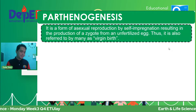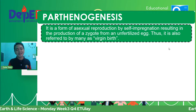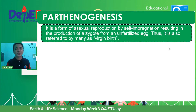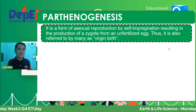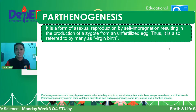Moving on to the fourth type — parthenogenesis. It is a form of asexual reproduction by self-impregnation, also called virgin birth. The term comes from the Greek words parthenos, meaning virgin, and genesis, meaning birth. The production of a zygote or fertilized egg occurs without sexual contact or a partner. Walang sexual contact — hindi kailangan ng partner para makapag-produce ng organism.